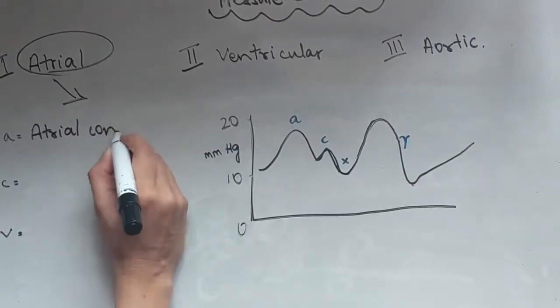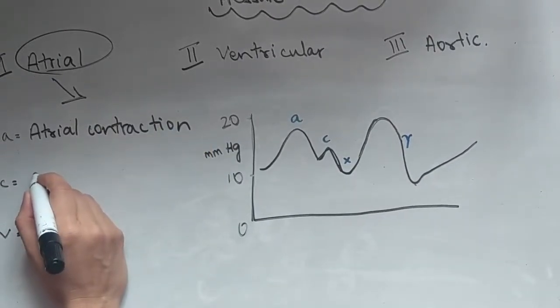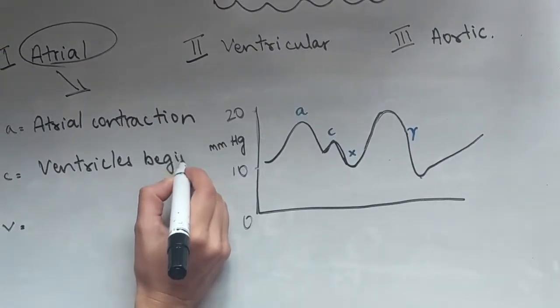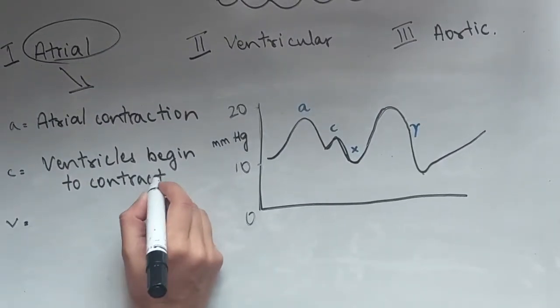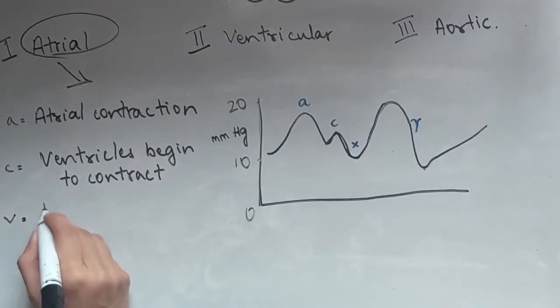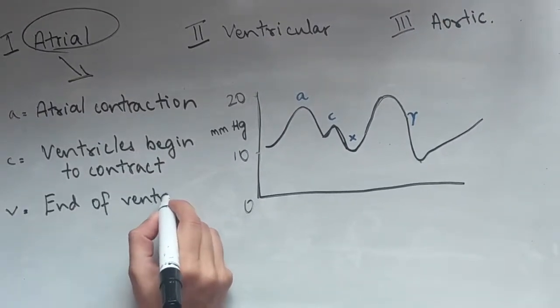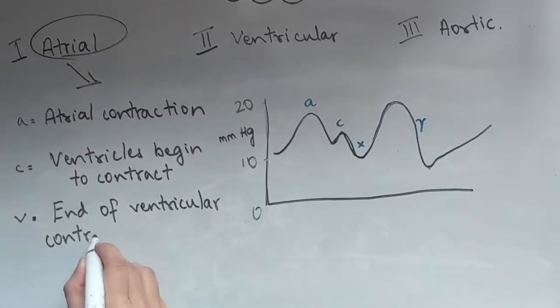C is for ventricular contraction basically. The ventricles begin to contract and the v-wave is not under a graph because it disappears when blood flows rapidly into the ventricles but it marks the end of ventricular contraction. So it's like a slow flow of blood into the atrium from the veins.